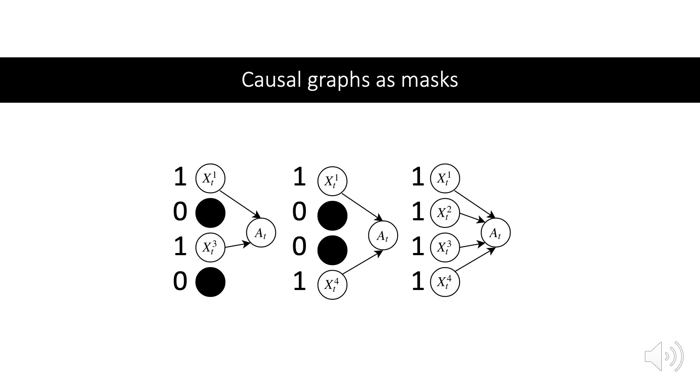We model a causal graph as a binary vector, with a 1 indicating the variable is a cause, and a 0 indicating the variable should be ignored. The binary vector acts as a mask to remove nuisance information.